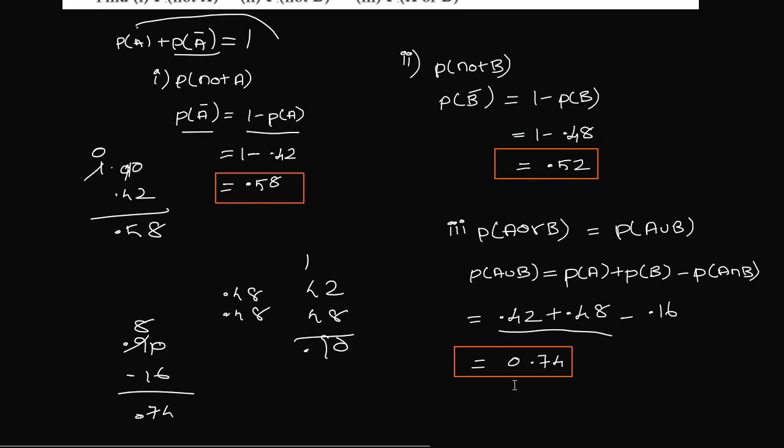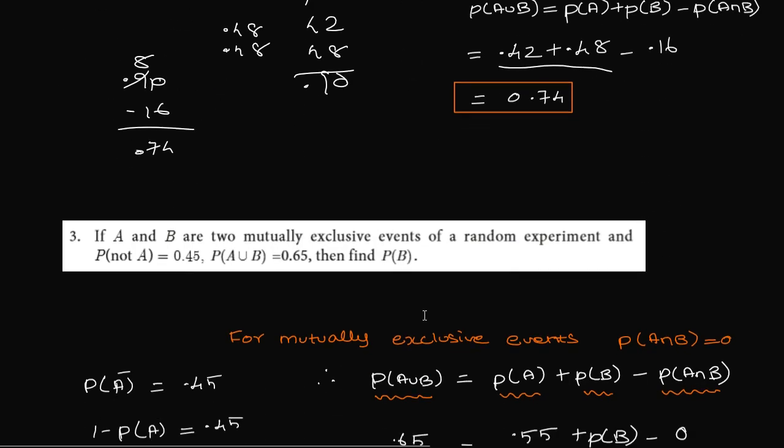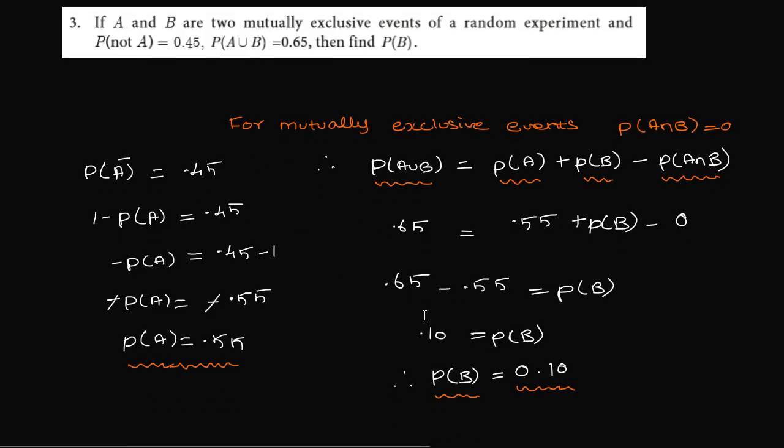So this is question number 2. This is question number 3. If A and B are two mutually exclusive events of a random experiment, P(not A) and P(A union B), we have to find P(B). So mutually exclusive event formula: the general formula P(A union B) equals P(A) plus P(B) minus P(A intersection B).